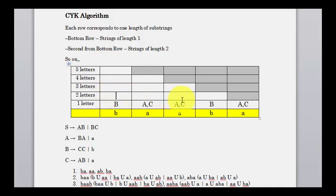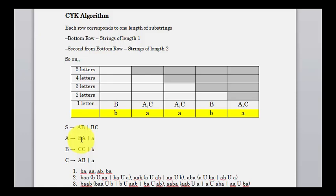In the second iteration, we look for two-letter substrings: BA, AA, AB, BA. For BA, the variables that generate it are B and C — since BA is generated by uppercase B and uppercase A, and also uppercase B and uppercase C. For AA, the combinations are A·A and C·C, giving variables A, C, and also C·C, which points to just B, because B generates CC.